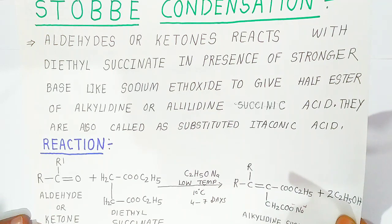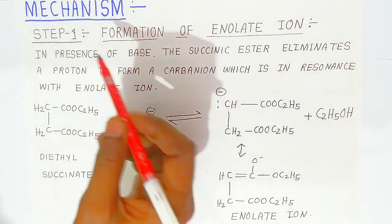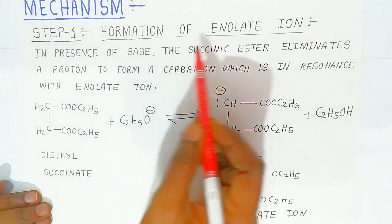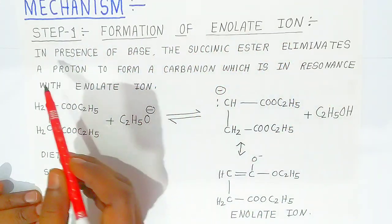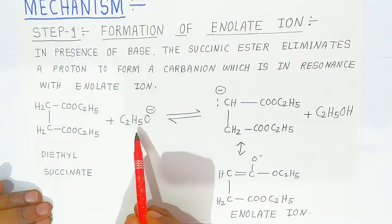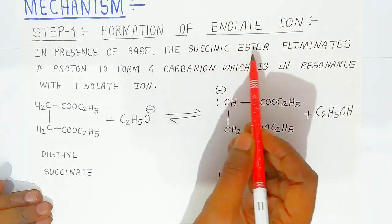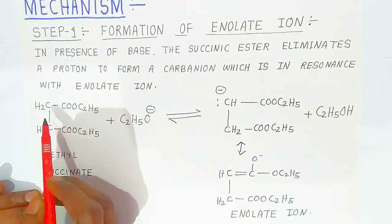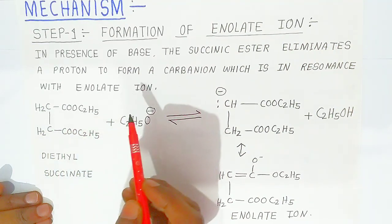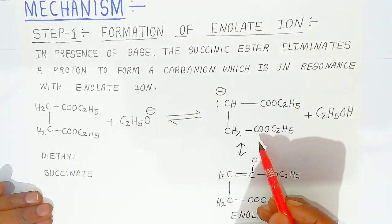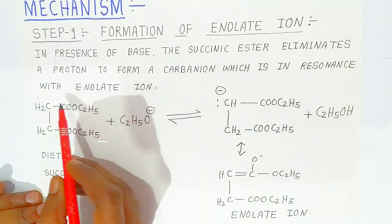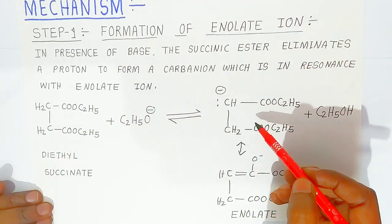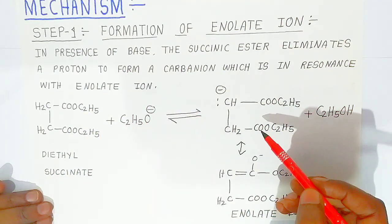Now we are going to see the mechanism of the Stobbe condensation reaction. There are four steps. In the first step, there is formation of an enolate ion. In presence of base, the succinic ester eliminates a proton, forming a carbanion which undergoes resonance to form the enolate ion.